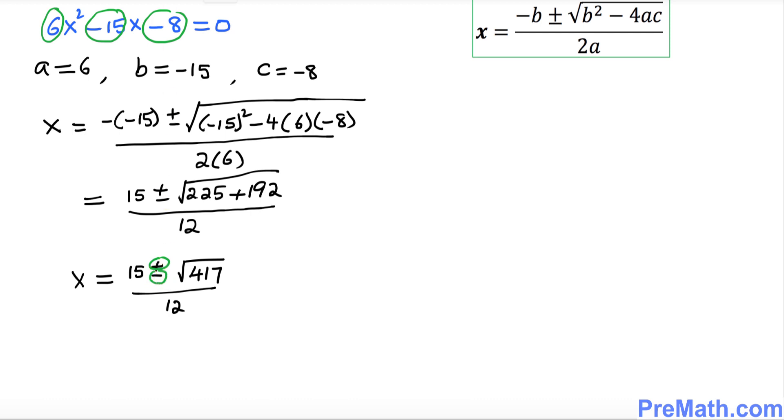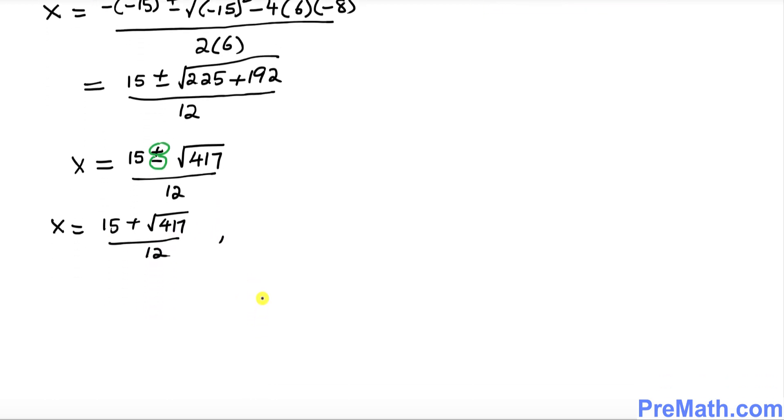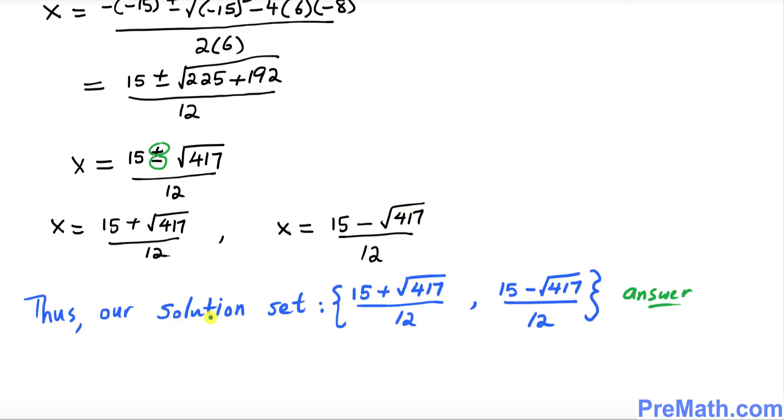We're gonna split these positive and negative sign, so we simply got one of the solution is x equal to 15 plus square root of 417 divided by 12, and the other solution we got x equal to 15 minus square root of 417 divided by 12.